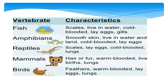This slide shows the characteristics of vertebrates. Fish have scales, live in water, are cold-blooded, can lay eggs, and have gills. Amphibians have smooth skin, live in water and on land, are cold-blooded, and can lay eggs. Reptiles have scales, can lay eggs, are cold-blooded, and have lungs. Mammals have hair or fur, are warm-blooded, can give live births, and have lungs. Birds have feathers, are warm-blooded, can lay eggs, and have lungs.